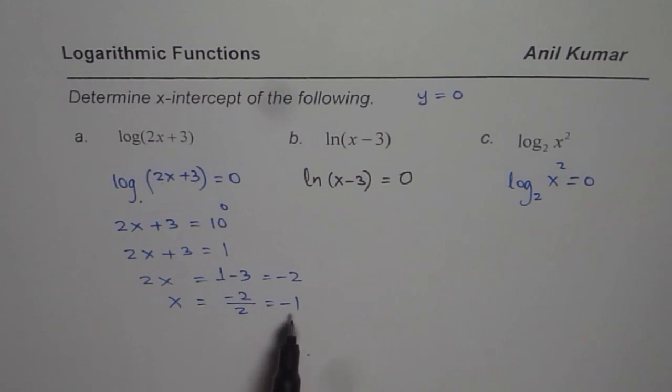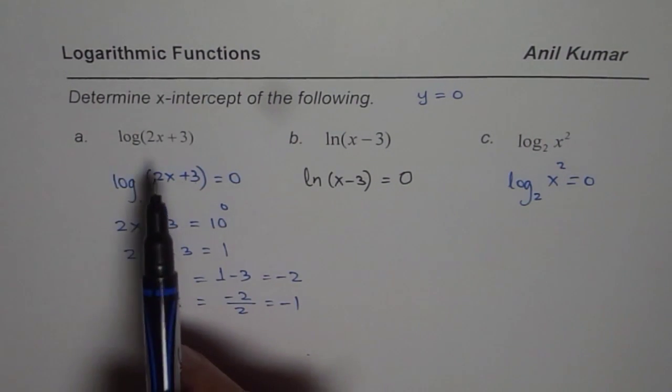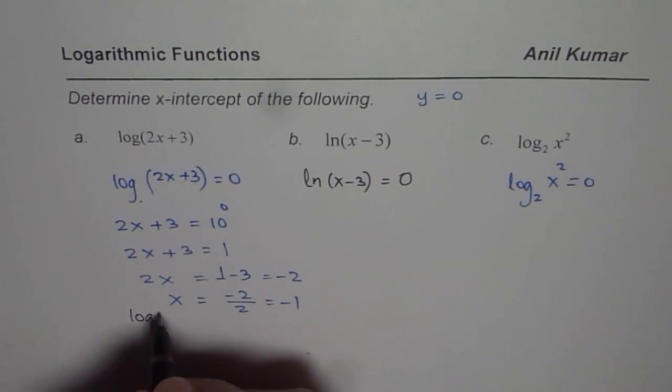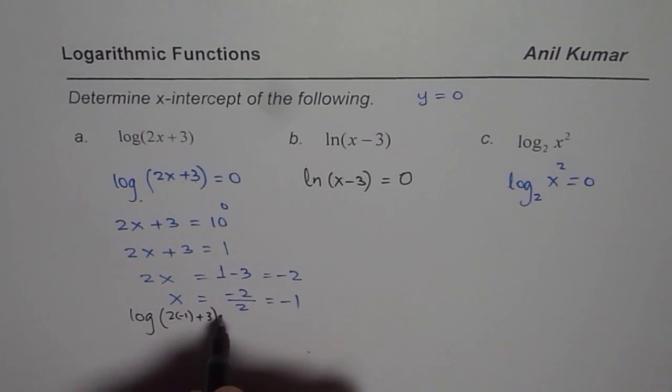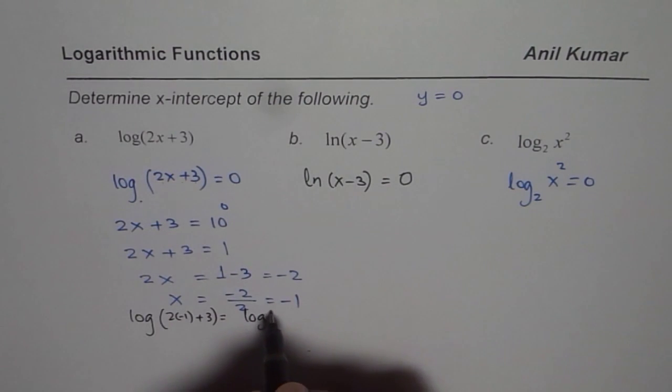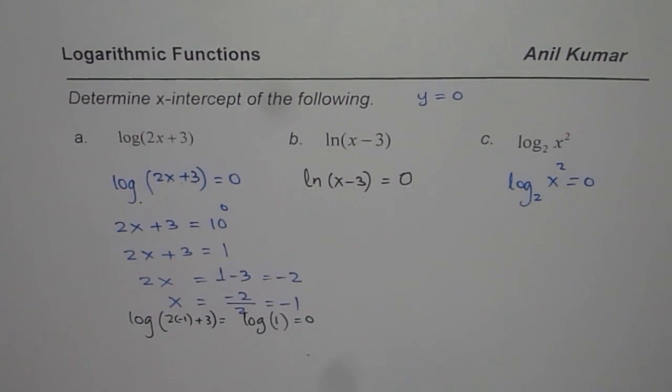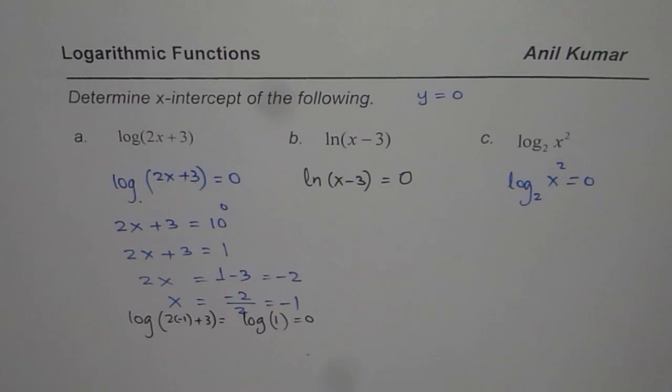x equals minus 1 is the answer. Now if I substitute minus 1 here, what do I get? Let us substitute. We get log of 2 times minus 1 plus 3, and that is log of minus 2 plus 3, log of 1. Basically, log of 1 is indeed equal to 0. If we make this 1, then also our problem is solved. That is kind of a shortcut method which I will like to use now.